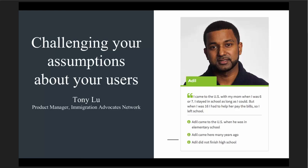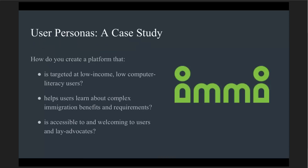One of the major takeaways from this project was that we were constantly being challenged to rethink our assumptions about our users and how they interact with legal information. IMI was a platform targeted at low-income and low-computer-literacy users who were interested in learning about immigration benefits as they applied to themselves — what different requirements for immigration relief might be. One of the big challenges was to take this huge, complex body of law and make it accessible and welcoming to users as well as lay advocates.